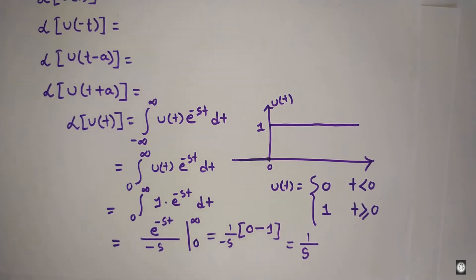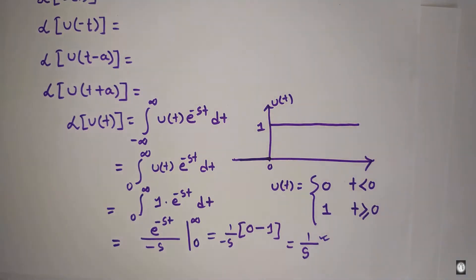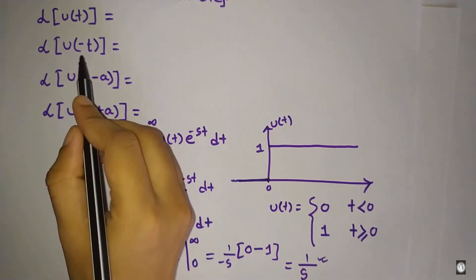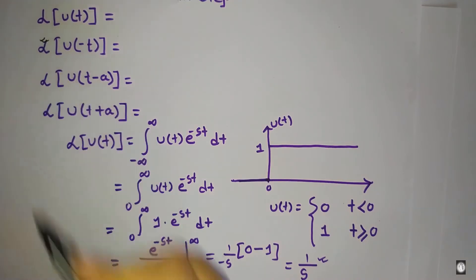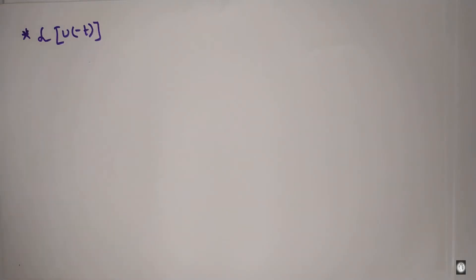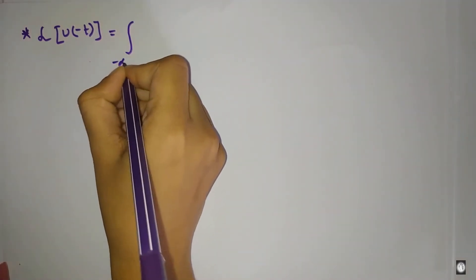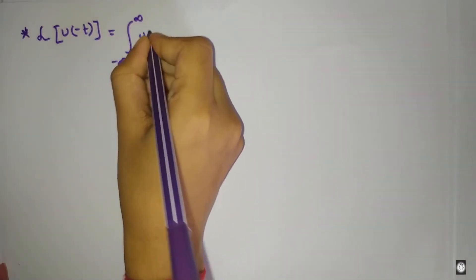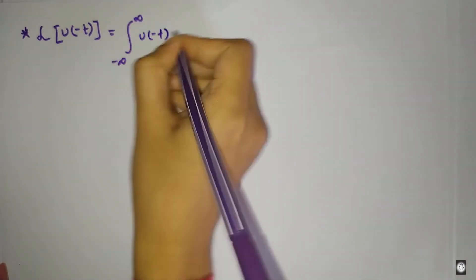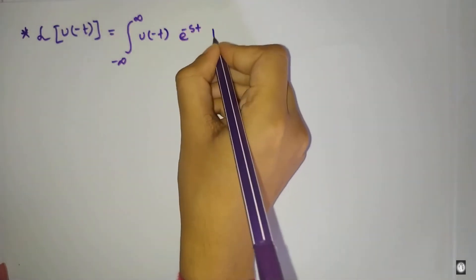The Laplace transform of u of t is equal to 1 by s. Now for u of minus t, the Laplace transform is equal to the integral from minus infinity to plus infinity of u of minus t times e to the power minus st dt.